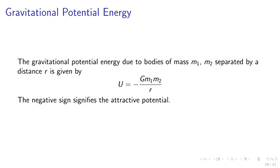Gravitational potential energy. The gravitational potential energy due to bodies of mass m1 and m2 separated by distance r is given by U equals negative G m1 m2 over r. The negative sign signifies the attractive potential.